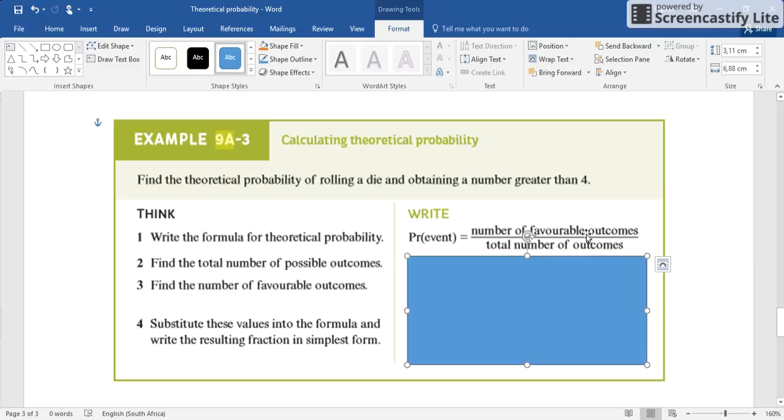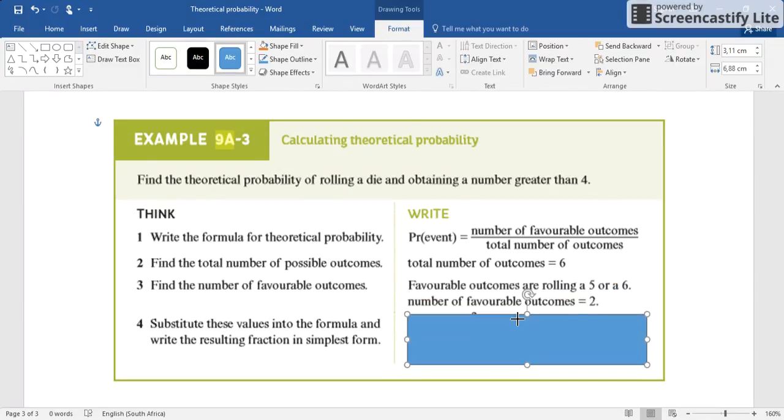So you would do 2 divided by 6. Let's see - find the total possible outcomes, which is 6. Find the number of favorable outcomes - it's 5 or 6, so your favorable outcomes is 2.